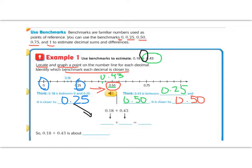And in our original problem it said that we were going to add them. So now we are going to take the two benchmarks that we rounded to and add them. So this one is going to go here. 0.25. And this one is going to go next to it. 0.50. And then when we add them together, 25 plus 50 is going to give us an estimate of 0.75. So if I have about 18 cents plus about 43 cents, then when I add them together I get about 75 cents. So 0.18 plus 0.43 is about 0.75.